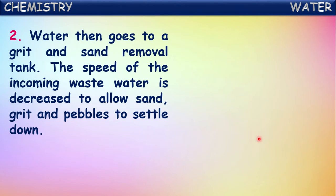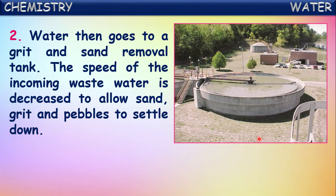Next, water goes into a grit and sand removal tank. The speed of incoming wastewater is decreased to allow sand, grit, and pebbles to settle down, so that they can be removed from the water.